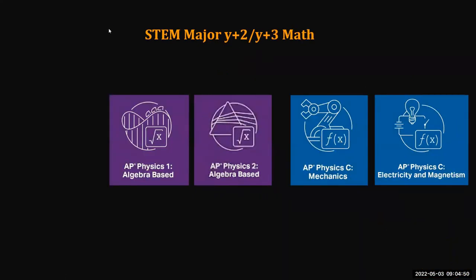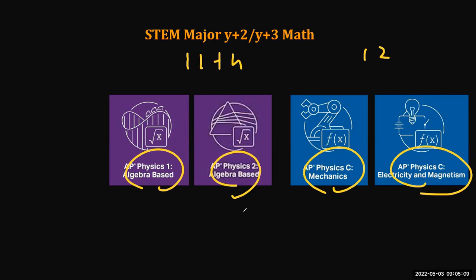If your math level is even faster, some high schools like Saratoga High or Lynbrook High School, in 11th grade they offer AP physics one and two, and then 12th grade they offer AP physics C mechanics and E and M. So this one is more complete, and I like this type of curriculum, but not every high school supports this.